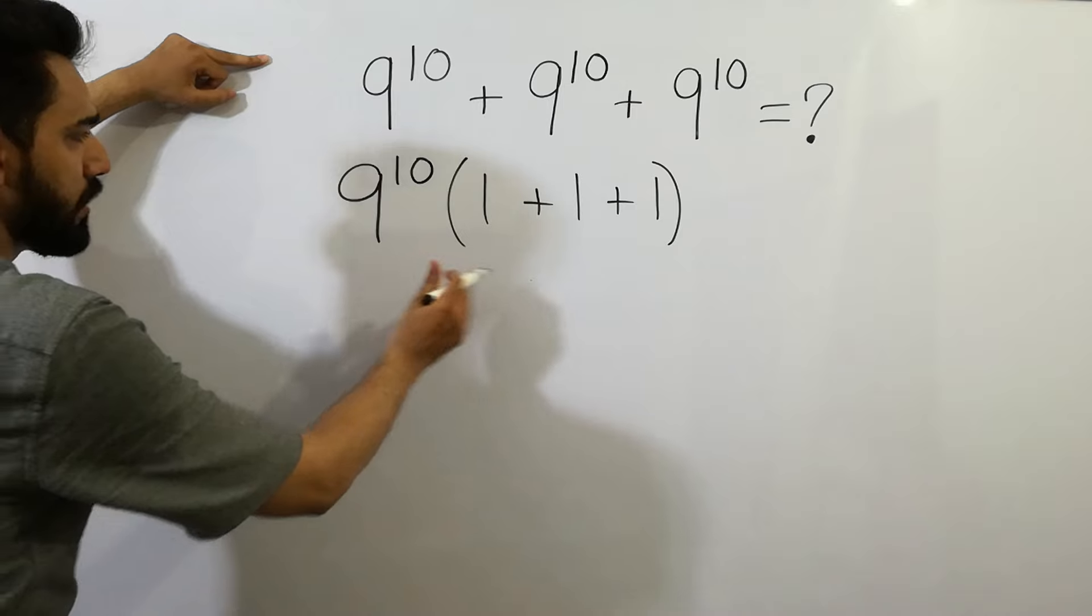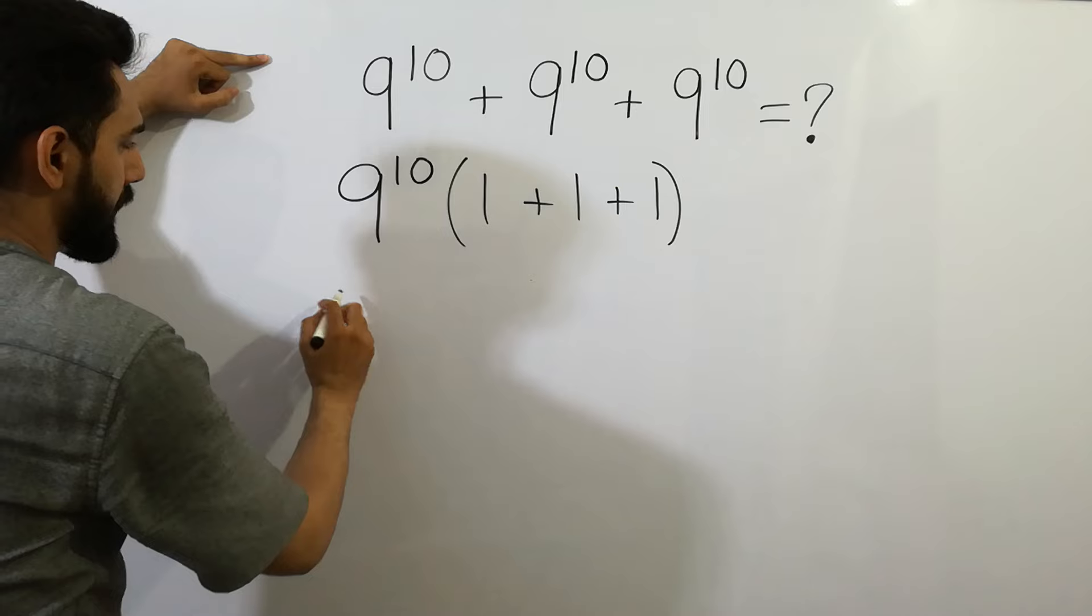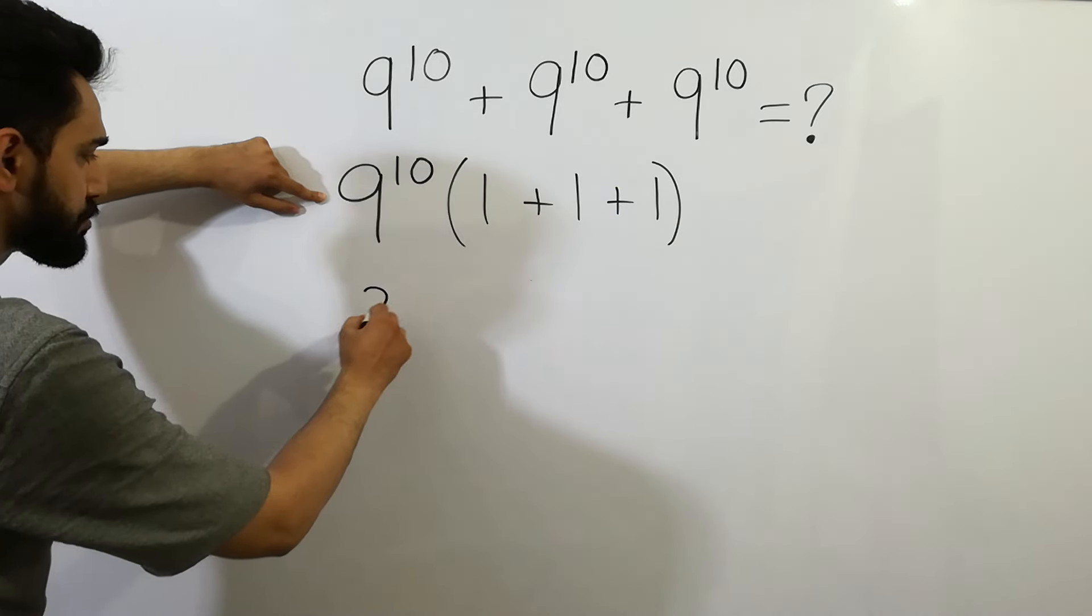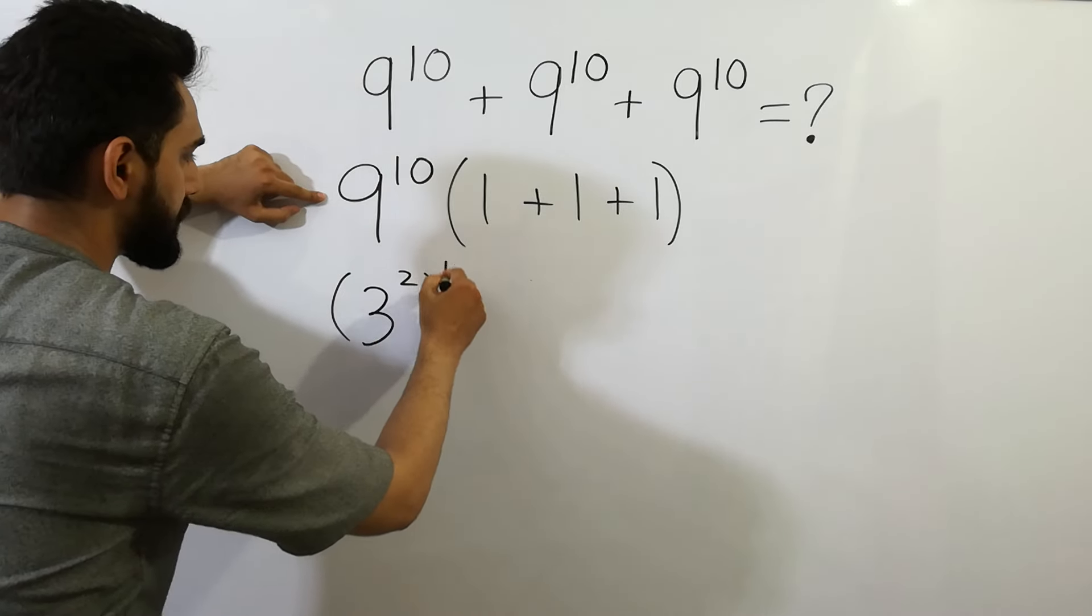Next, 1 plus 1 plus 1 is equal to 3, and 9 can be written as 3 squared to the power 10.